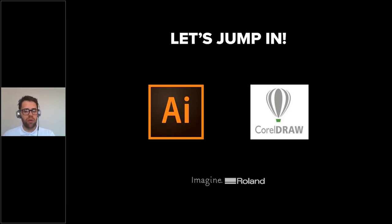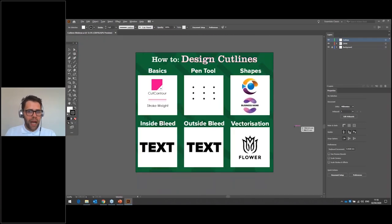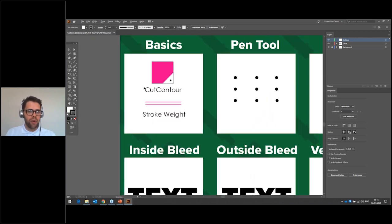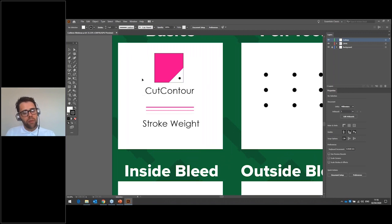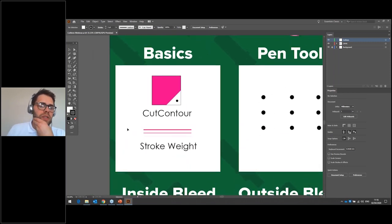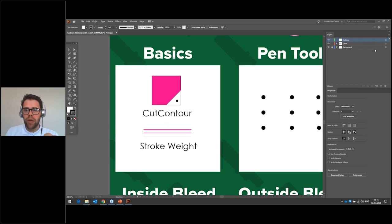This is the document I mentioned — happy to share afterwards, so drop us an email at academy@rolanddg.co.uk and I'm happy to share it so you can work through the exercises yourself. The first thing is just a couple of basics. To zoom in I'm using Alt and the mouse wheel, then picking an area to zoom in on. To pan around I'm holding down the spacebar and using left-click to move around.